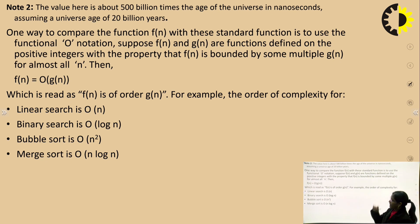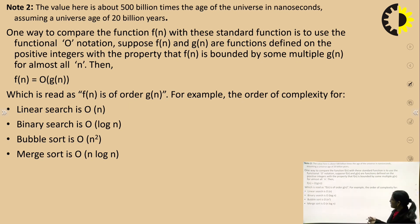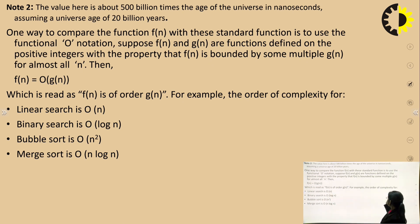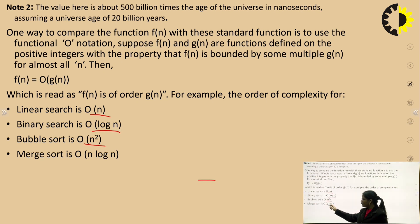One way to compare f(n) with standard functions is to use the Big O notation. Suppose f(n) and g(n) are functions defined on positive numbers with the property that f(n) is bounded by some multiple c·g(n) for almost all n; then f(n) = O(g(n)), read as 'f(n) is of order g(n)'. For example: linear search takes O(n) time, binary search takes O(log n) time, bubble sort takes O(n²) time, and merge sort takes O(n log n) time.